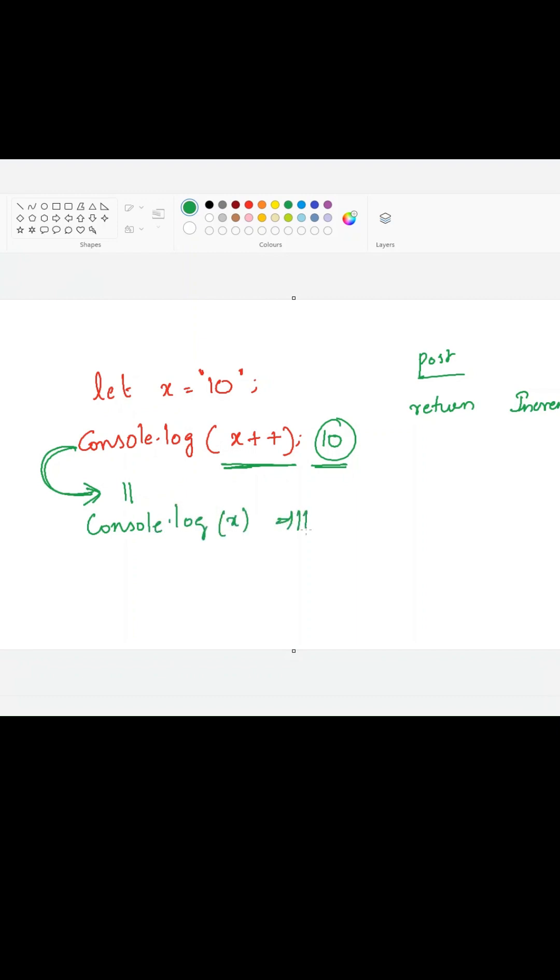If you observe here, we are using a string. Even though we are using a string, it will not cause any error because postfix operator will convert this into a number by using type coercion concept in JavaScript.